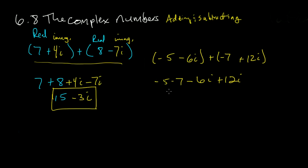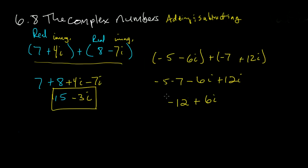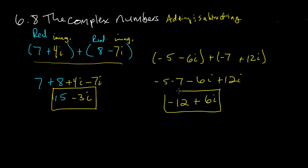So if you owe me $5 and you borrow 7 more, you now owe me $12. Negative 6i plus 12i is plus 6i. You get the hang of it. It's not too difficult. Let's try some subtraction.